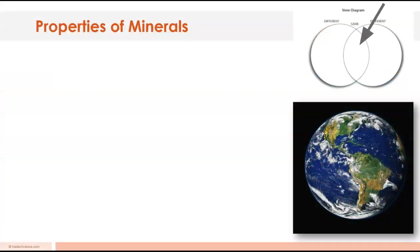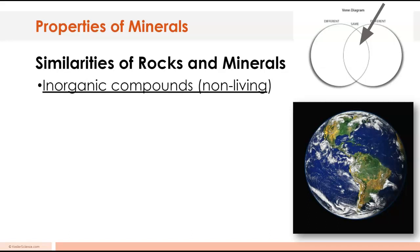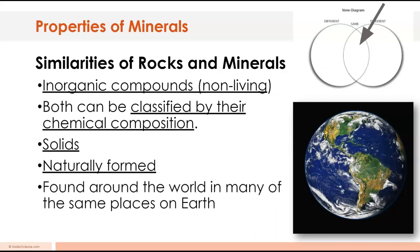We're gonna start in the middle of our Venn diagram. We're gonna look at what's the same about rocks and minerals. They're inorganic compounds which means they're non-living. Both can be classified by their chemical composition. They're solid, they're formed naturally, and you find them in a lot of the same places on earth. Go ahead and hit pause and copy these things down in the middle section of your Venn diagram.